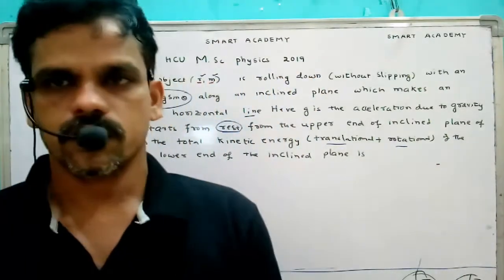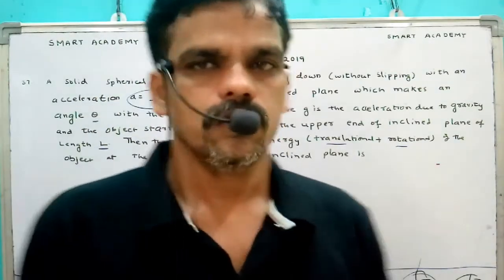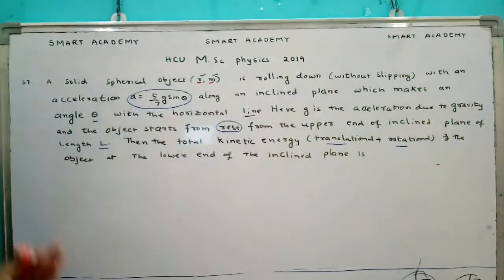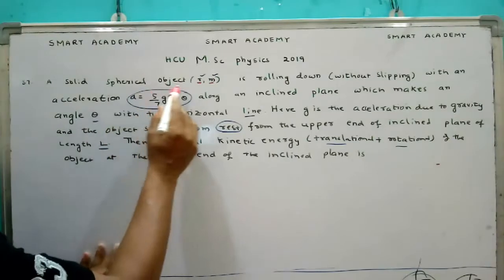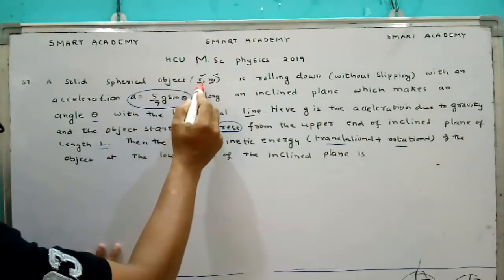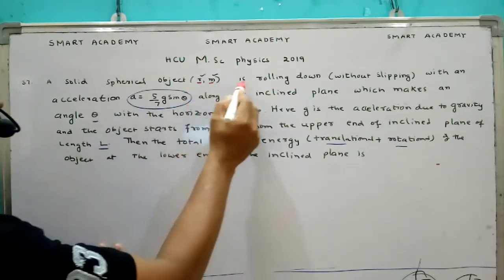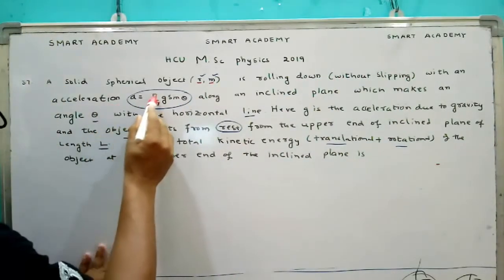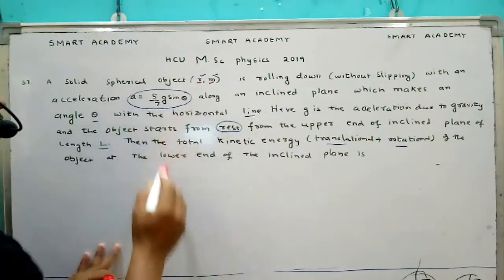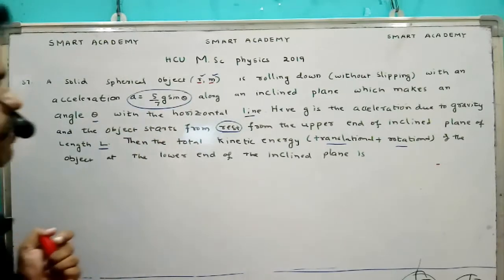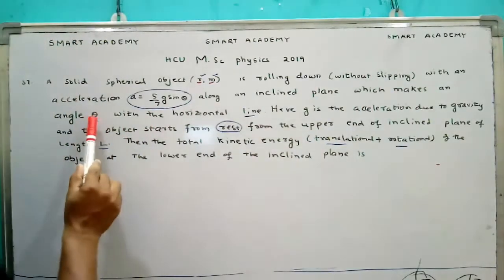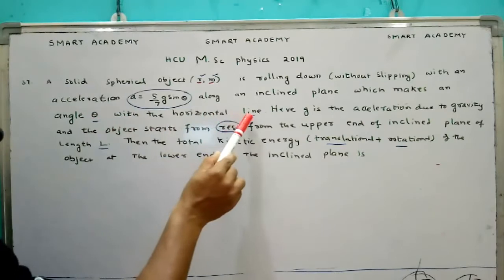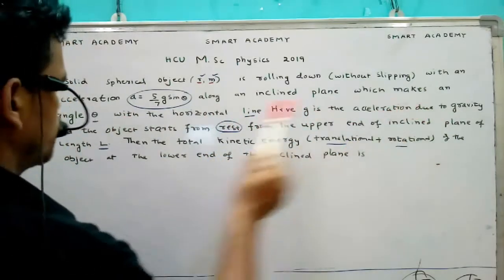So we have one question here: A solid spherical object which is having radius r almost fallen is rolling down without slipping with an acceleration a equal to 5 by 7 g sine theta along an inclined plane which makes an angle theta with the horizontal line.